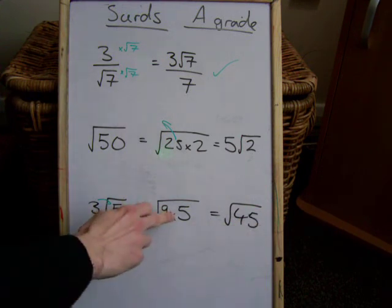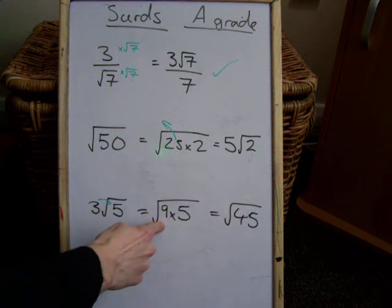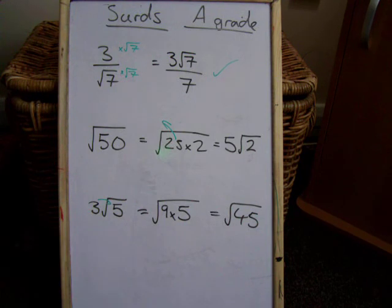Now looking backwards, if I was to simplify the root of 45, I'd look for a square number factor. 9 times 5, 9 is the square number, and then that would be taken out and square rooted, in which case you'd get 3 lots of root 5, and it works both ways.